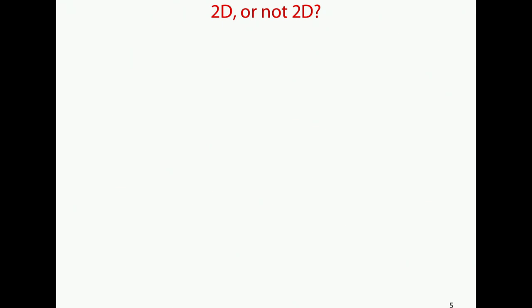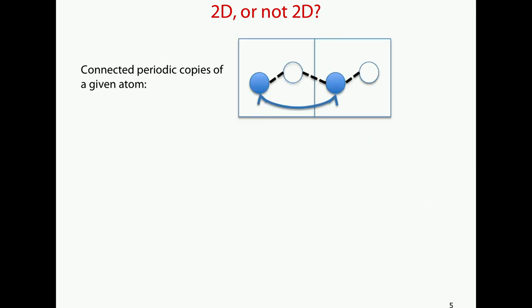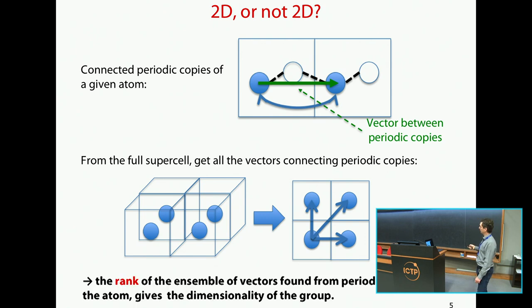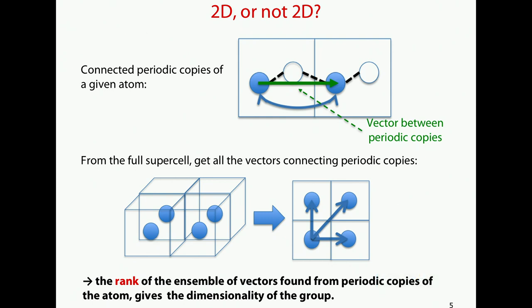When you have found those groups of connected atoms, you want to know if it's 2D or not. The idea is fairly simple: you just look for periodic copies of a given atom within the supercell, which makes an ensemble of vectors. You can then compute the rank of these vectors, and this gives you the dimensionality of your substructure. It can be 2D, 1D, or even a cluster if you don't find any periodic copy — so we can get any kind of substructure with any dimensionality.